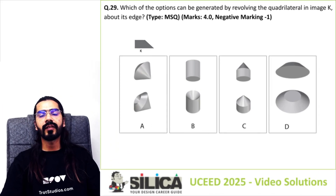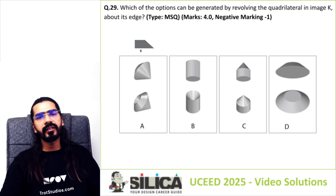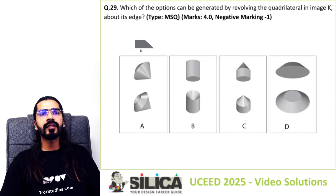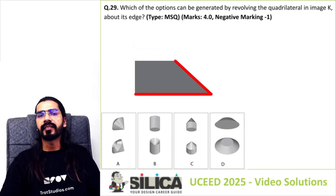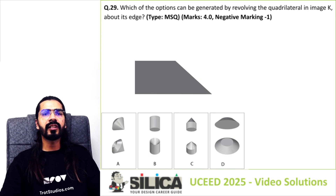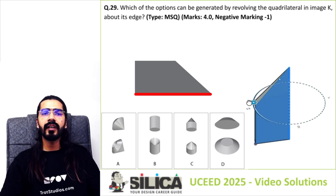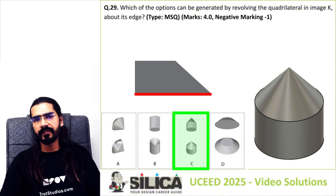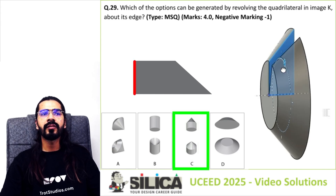Let's solve question number 29 of UC 2025. This is an MSQ type question, meaning more than one option might be correct. The question: which of the options can be generated by revolving the quadrilateral in image K about its edge? It has four edges, so let's revolve one edge at a time. Starting with the longest edge — revolving around it gives option C. The shortest edge — revolving around it gives option D.